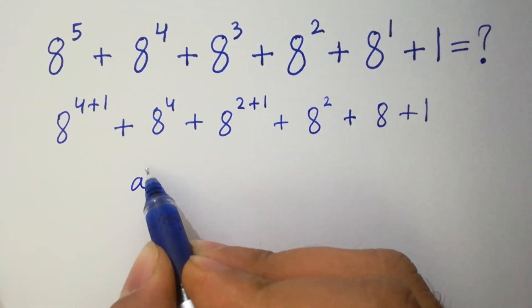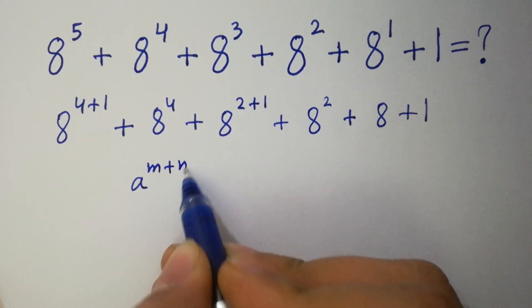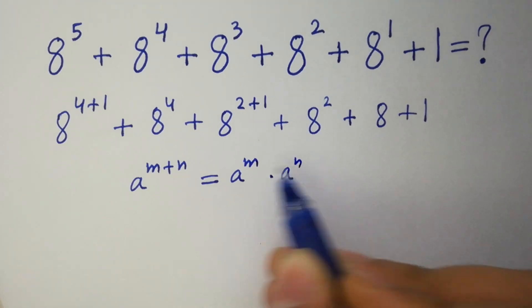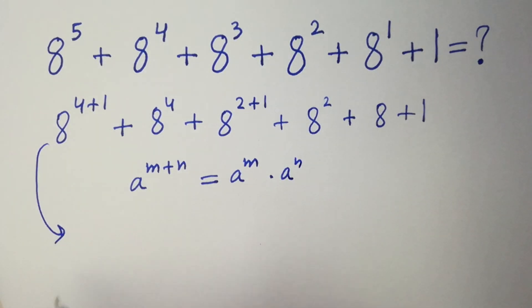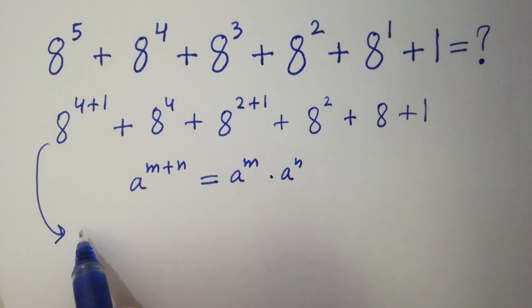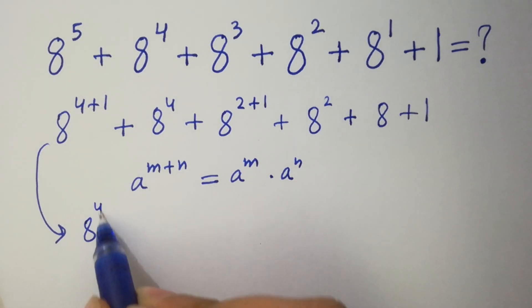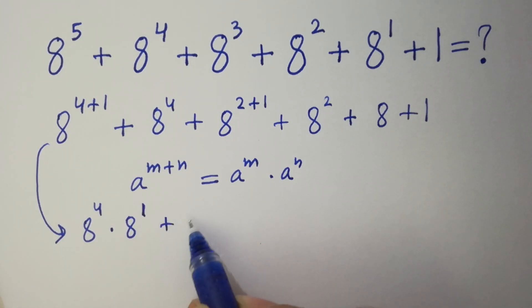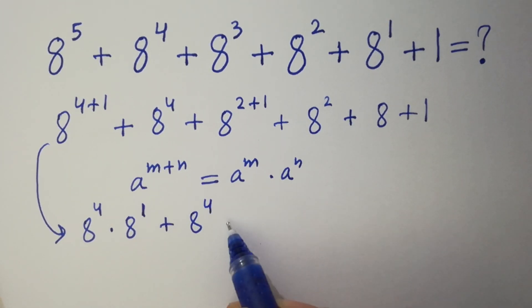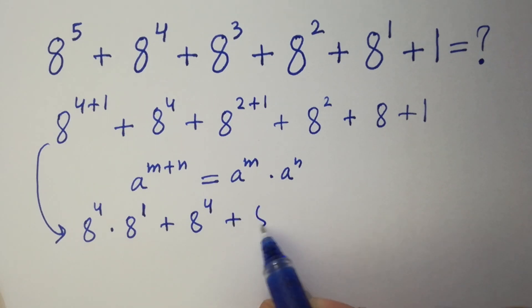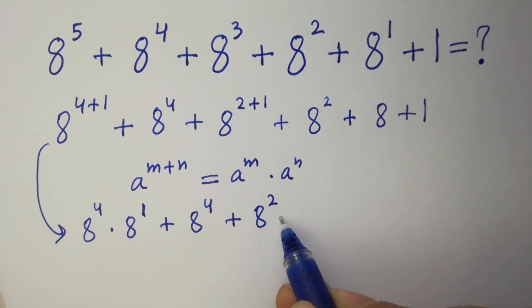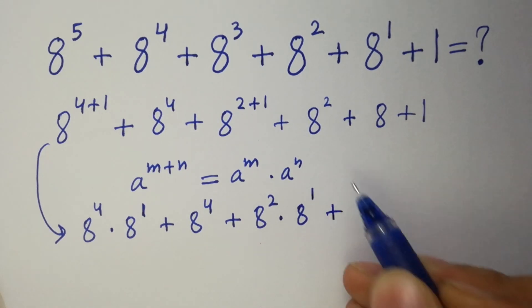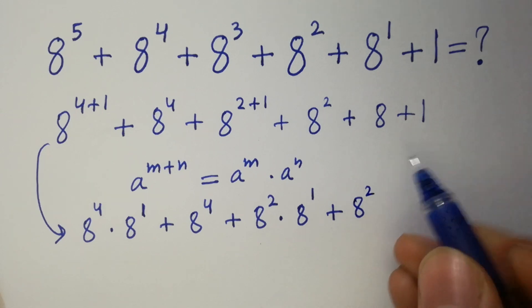Next, as we know, a to the power m plus n equals a to the power m times a to the power n. Then it will be 8 to the power 4 times 8 to the power 1, plus 8 to the power 4, plus 8 to the power 2 times 8 to the power 1, plus 8 squared, plus 8 plus 1.